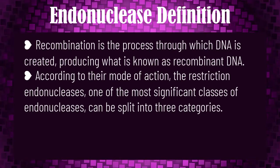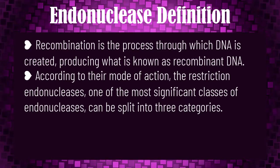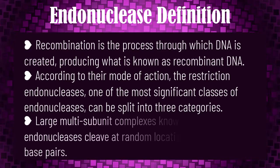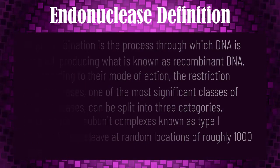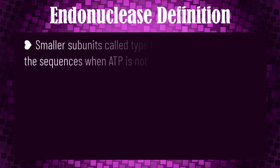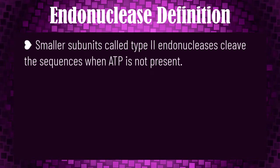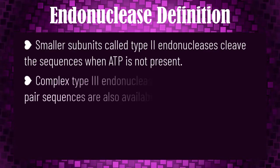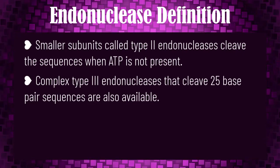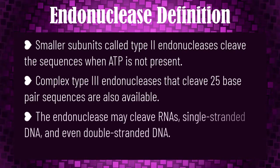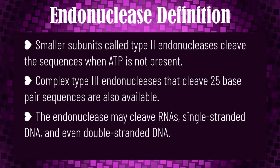According to their mode of action, restriction endonucleases — one of the most significant classes of endonucleases — can split into three categories: large multi-subunit complexes known as Type 1 endonucleases cleave at random locations of roughly 1,000 base pairs; smaller subunits called Type 2 endonucleases cleave sequences when ATP is not present; and complex Type 3 endonucleases that cleave 25 base pair sequences are also available.